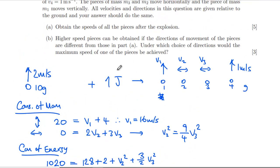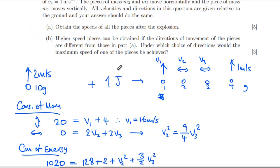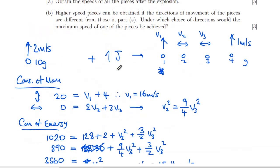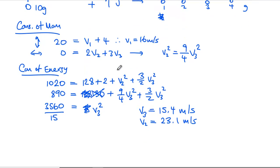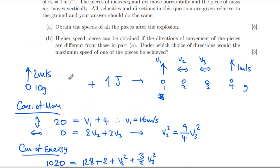Which means that v₂ comes out at 23.1 meters per second. Is that everything they wanted? Obtain the speeds of all the pieces after the explosion. Yeah, fair enough. They just said speed, so nothing about velocity, so that's fine. Obviously these are in one direction or the other in opposing directions, but that's okay.